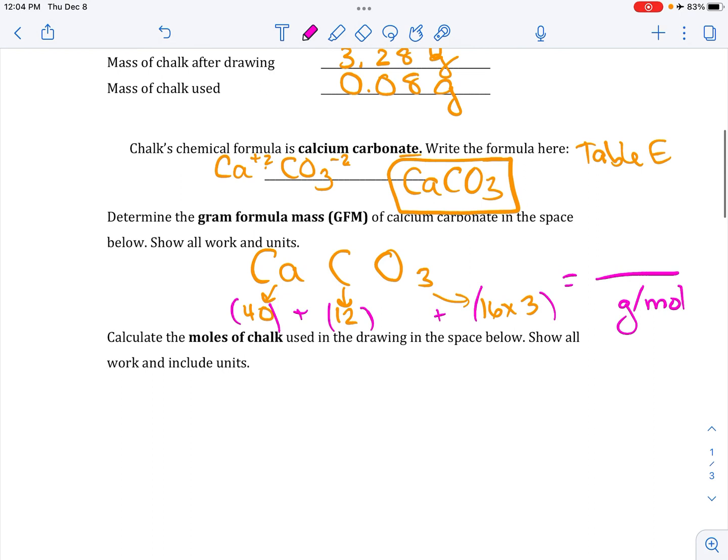Now, we're going to need to calculate moles of chalk. And we clearly need the information we just calculated. Show all work and include units. OK, so to go from grams back to moles, what we do is divide by GFM. So we're going to take the mass of the chalk we used, which was 0.08. And we're going to divide it by the GFM, which I didn't calculate for you, but you've got.